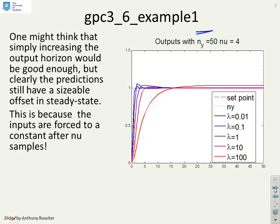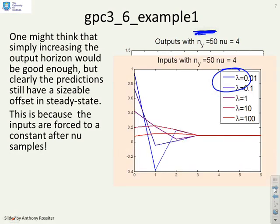If I increase ny to 50 you might say look I just need a long horizon, let's take ny to 50 and see what happens. But interestingly with lambda equals 100 you can still see quite a sizeable offset. So there's an interesting point here: as I increase lambda the required output horizon seems to be increasing quite significantly and perhaps disproportionately to what I'm doing with the lambda. And the reason for this is obviously that the inputs have been forced to slow down.